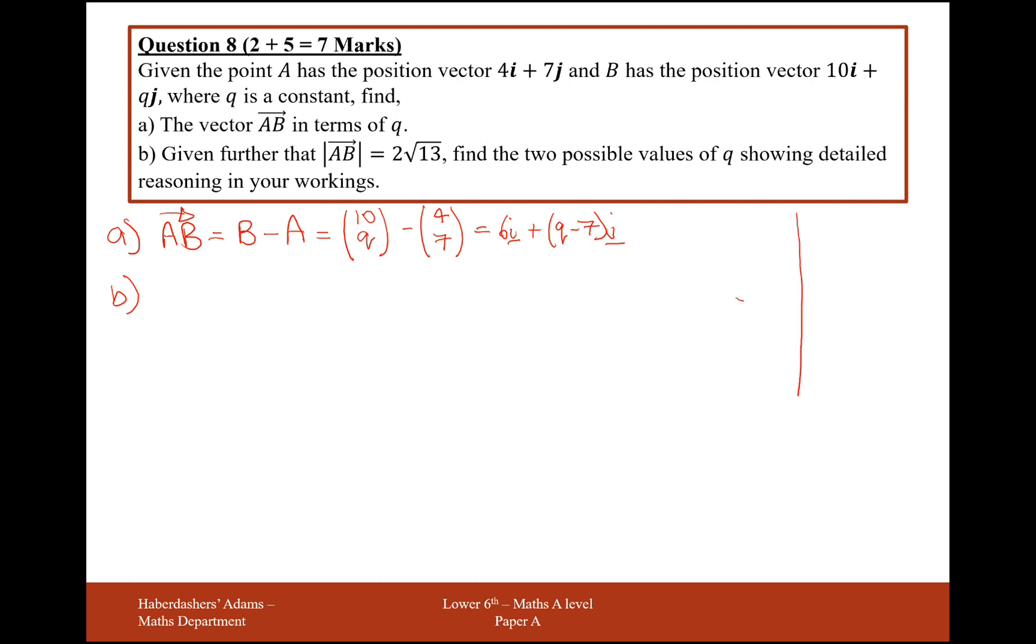So let's just see what we've got here. We've got coordinate 4, 7, and the coordinate 10, q. And the distance between these two coordinates here is going to be 2 root 13.